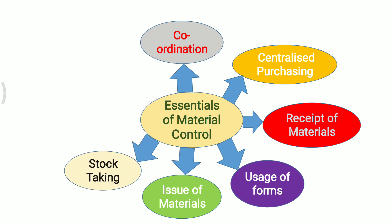Next is Stock Taking. Perpetual Inventory should be followed for stock verification to reveal differences in stock due to pilferage, theft and wastage. Moreover, the Perpetual Inventory system avoids closing down of the factory for stock verification and valuation.